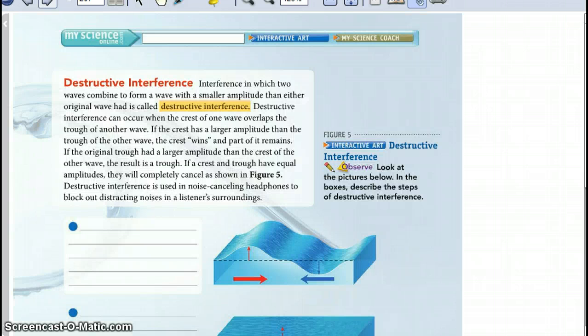Destructive interference. Interference in which two waves combine to form a wave with a smaller amplitude than either original wave had is destructive interference. Destructive interference can occur when the crest of one wave overlaps the trough of another wave. If the crest has a larger amplitude than the trough of the other wave, the crest wins and part of it remains. If the original trough had a larger amplitude than the crest of the other wave, the result is a trough.